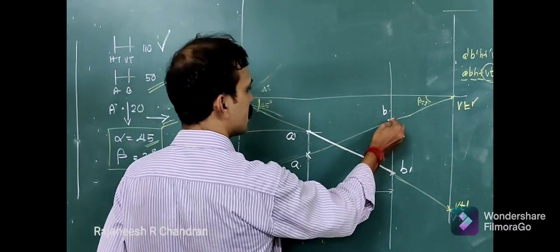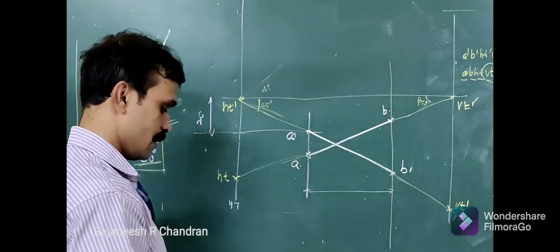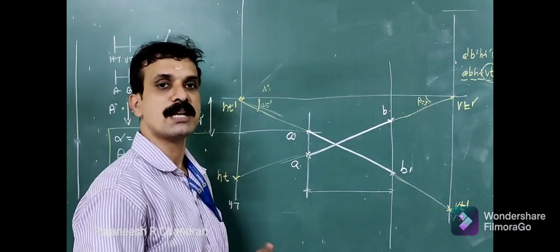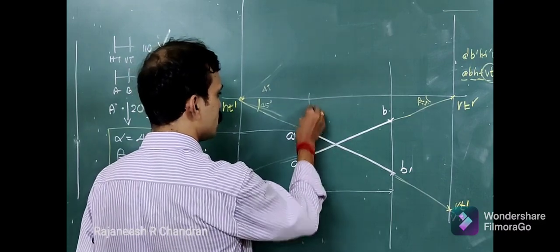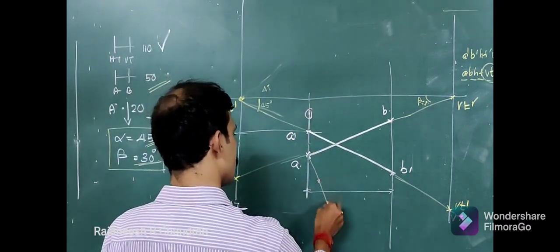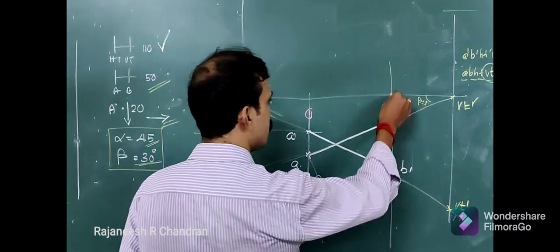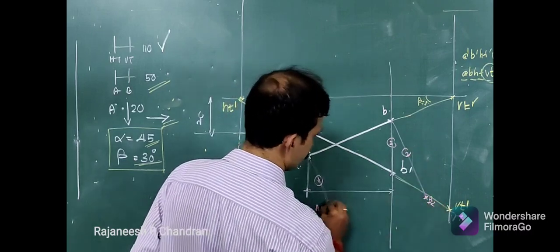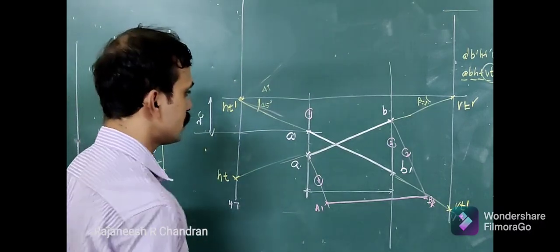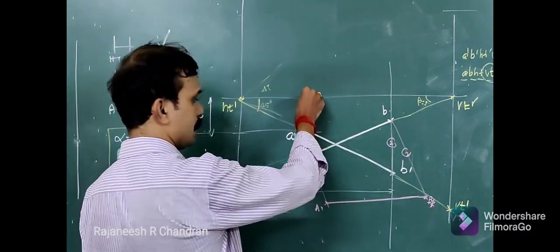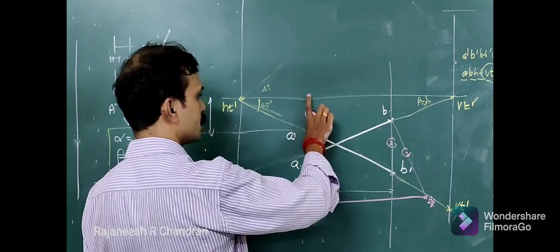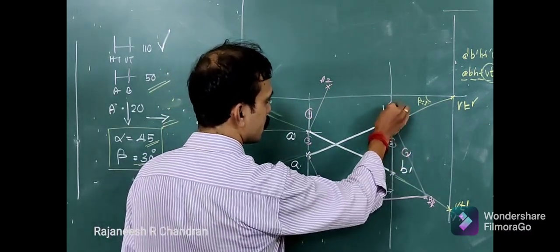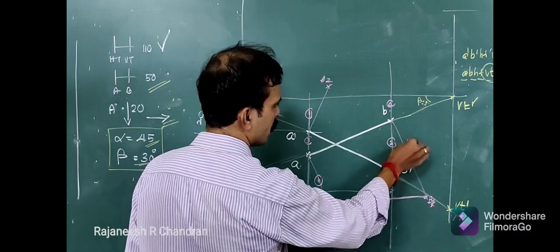We have now obtained the front view A dash–B dash as well as the top view A–B. Whenever you have the two projections A dash–B dash and A–B, you can complete the answer using the trapezoid method. Tag the length of the line, take that distance from the vertical from here to get point M. Tag this distance from the vertical from here to get A on B. Then take the XY distance, apply the trapezoid method from here to get A2, and tag that distance using the trapezoid from here.